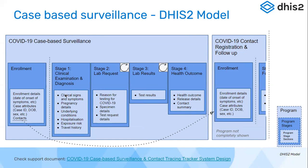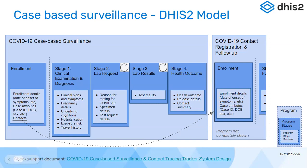Stage one collected the clinical history, examination, and diagnosis of the patient. Within this stage, clinical signs and symptoms of COVID-19 were captured — and as new symptoms were discovered, they were added to the list. For female cases, details of pregnancy were captured, along with information on any underlying diseases, hospitalization details, risk of exposure, and travel history. This was a one-time event where all information was gathered from the patient during the initial screening.